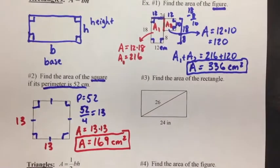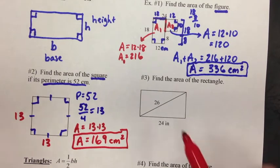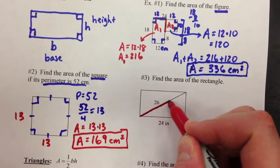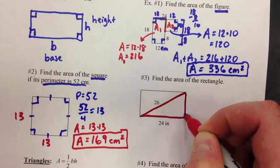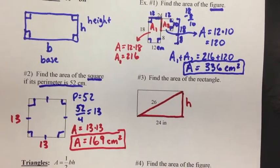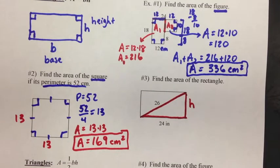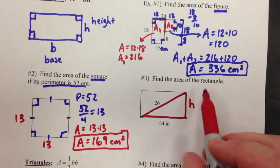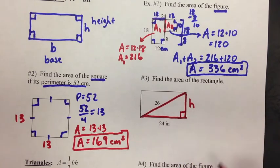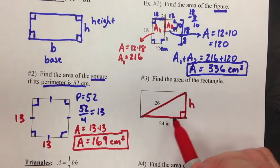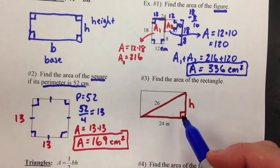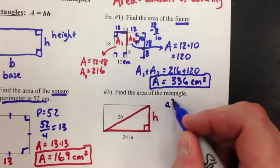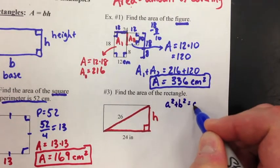Number three, find the area of the rectangle. They gave us a diagonal in here, it's 26. They gave us the base is 24. But unfortunately, we do not know the height. But they also tell us it's a rectangle, and in a rectangle you know that you have right angles. So actually, this is a right triangle. And when you have a right triangle, one thing to always think about: a squared plus b squared equals c squared. Pythagorean theorem.